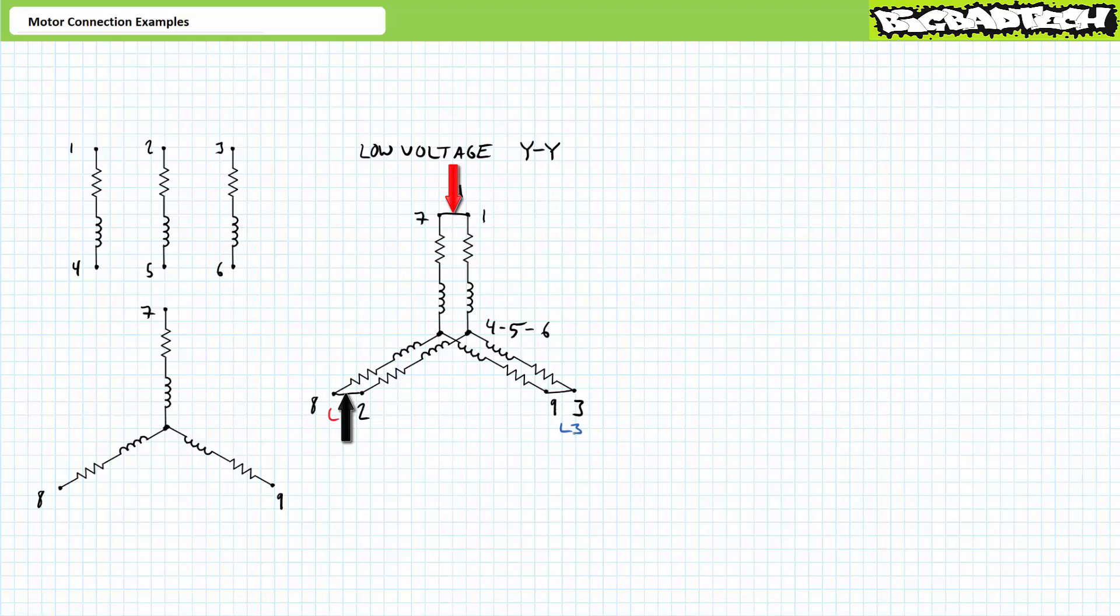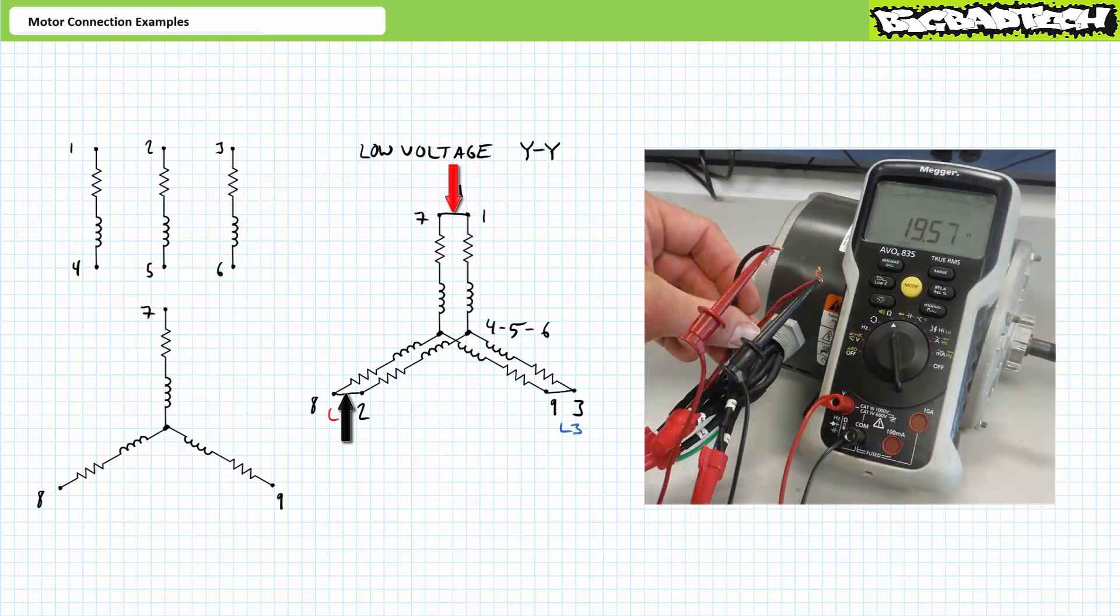If each of these windings is 20 ohms, each series path is a 40 ohm path. Two 40 ohm paths in parallel is 20 ohms. An ohmmeter between conjoined terminal one-seven and two-eight does indeed see a resistance of roughly 20 ohms as we might expect.